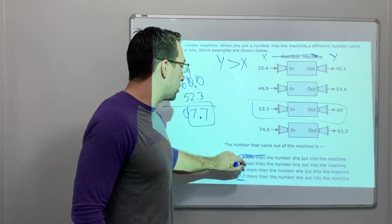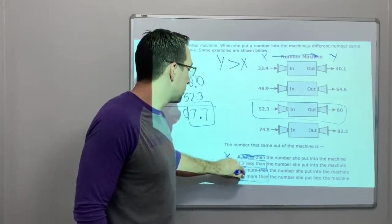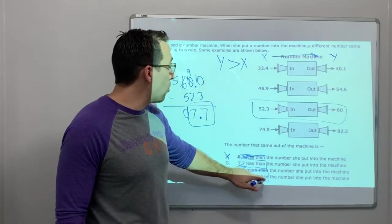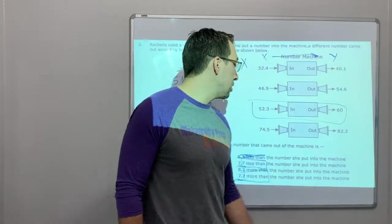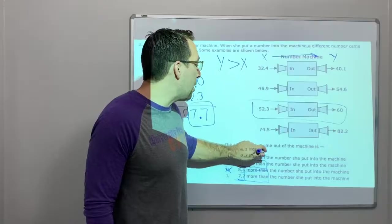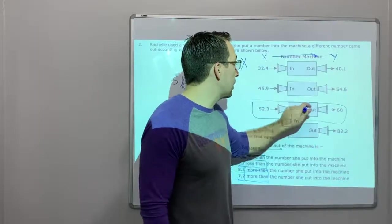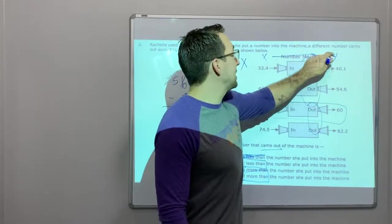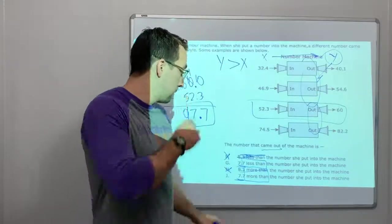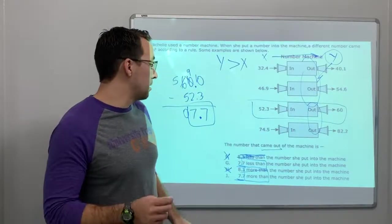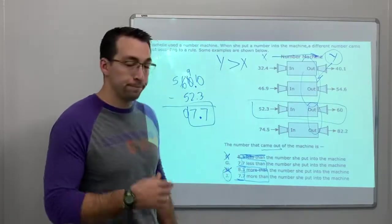So now the question is more, less than, or more than. 7.7 more than the number she put into the machine. The number that came out. So this is our out, right? Y is out. 7.7 more than. Yes, that's our answer. J. There you go.